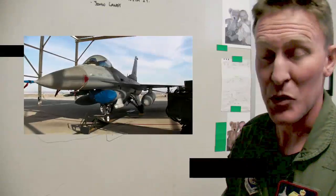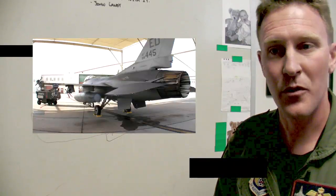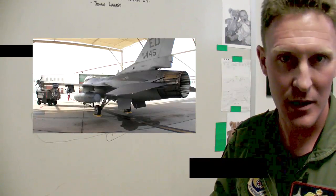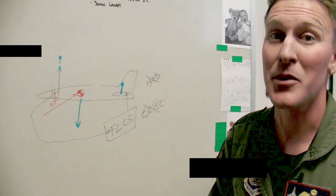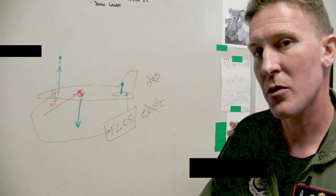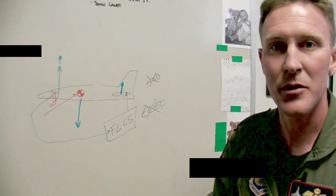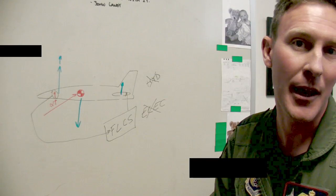Now, the F-16 is a single engine airplane, one engine to drive the electric system and the hydraulic systems. So, in the event of an engine failure, we have an emergency power unit that's designed to operate an emergency electric source, as well as one of the hydraulic systems, to allow us to control the airplane for a flame-out landing.